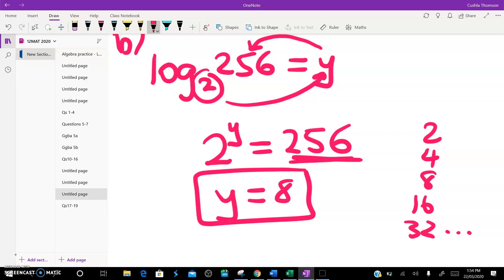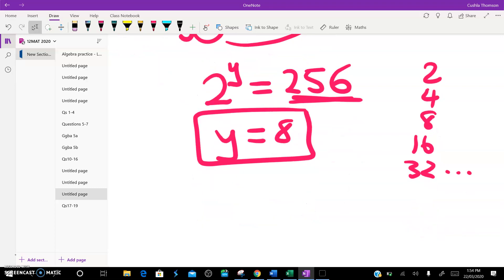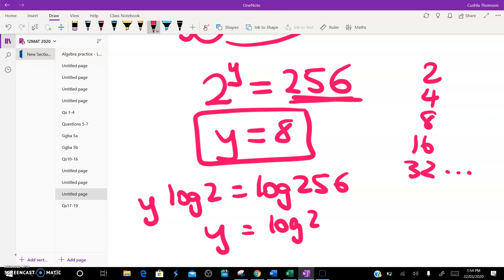Or you could take logs of both sides. So the other way to do it is y log 2 equals log 256. If you're doing a calculator thing, you'd get this. And it would give you 8.